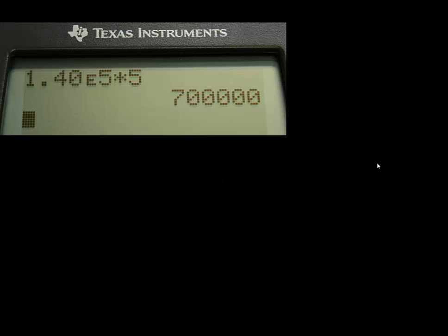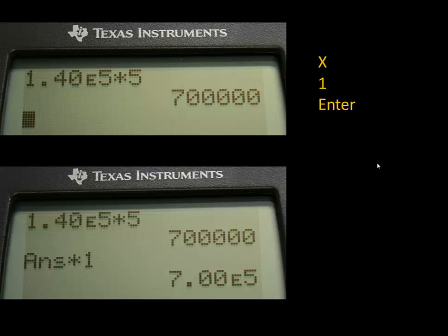At first your screen will appear unchanged. In fact it is unchanged from what it was before we went into that mode selection, but if we do one more operation, you'll see what happens. If you hit the multiplication key, that's the X key, then a 1, then enter, here's what your view changes to.